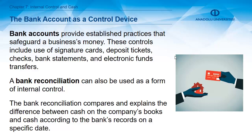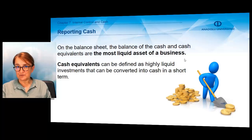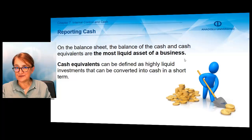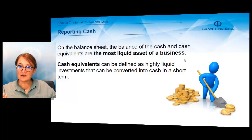You can try to find the reason why there are differences between your records and the bank's. Cash is an asset and will be reported on the balance sheet — not only bank notes or coins, but cash and cash equivalents will be reported as the first line, as the most liquid asset on the balance sheet. Cash equivalents can be defined as highly liquid investments that can be converted into cash in a short term.